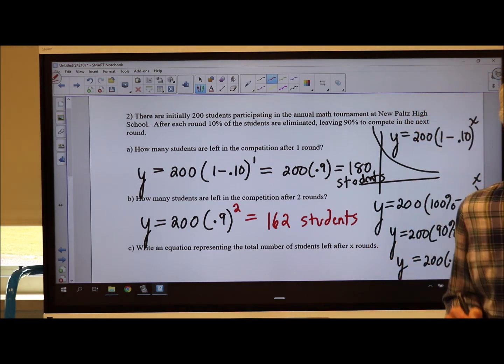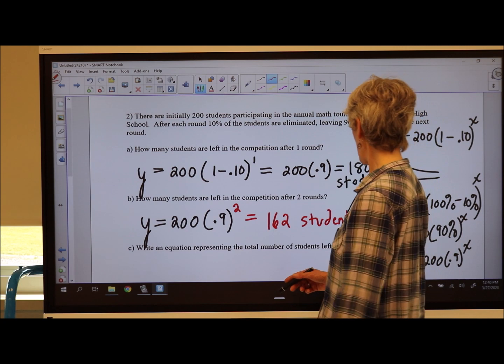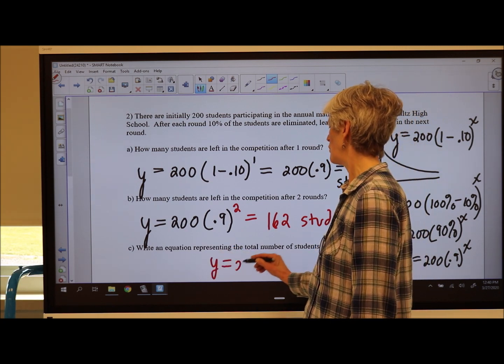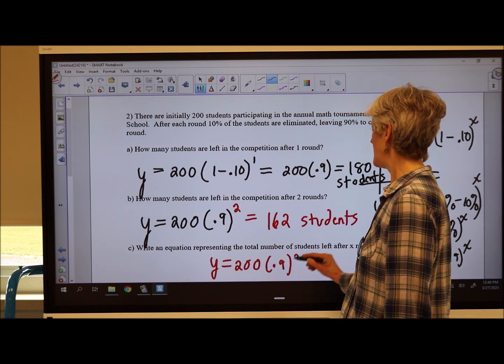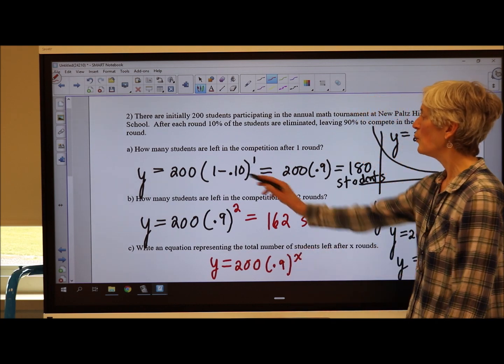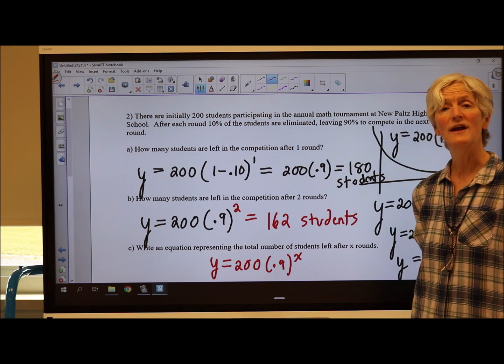Now, c says write an equation representing the total number of students left after x rounds. That's the equation that we were working with. You can either write it as 0.9 there or 1 minus 0.10. See you around.